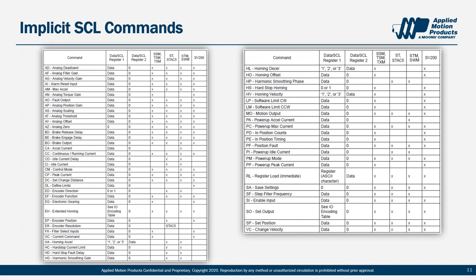The Host Command Reference details each SCL command supported in implicit messaging and how to use them. For a complex move such as hard stop homing, you would need to send about a dozen SCL commands to set up all the different move parameters — speeds, currents, and so on — before finally kicking it off with an HS command. While implicit messaging is easier than explicit messaging, it's still quite an ask to do all that PLC programming and sequencing. That is exactly why we've created our AOIs — we want this to be as accessible and easy to use as possible.